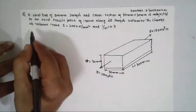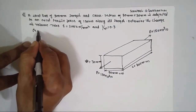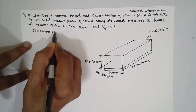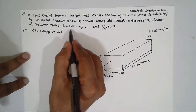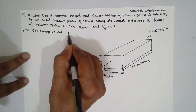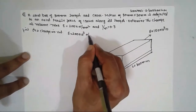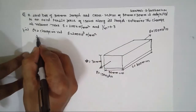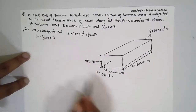We have to find out the change in volume, that is ΔV. E = 200 × 10³ Newton per mm² (convert to Newton per mm² by multiplying by 10³), and μ (1/m) = 0.3 Poisson's ratio.